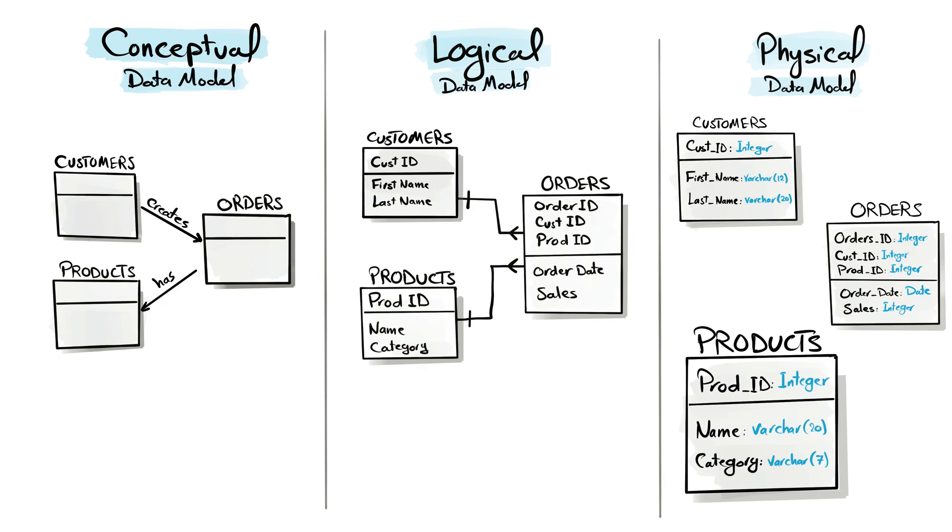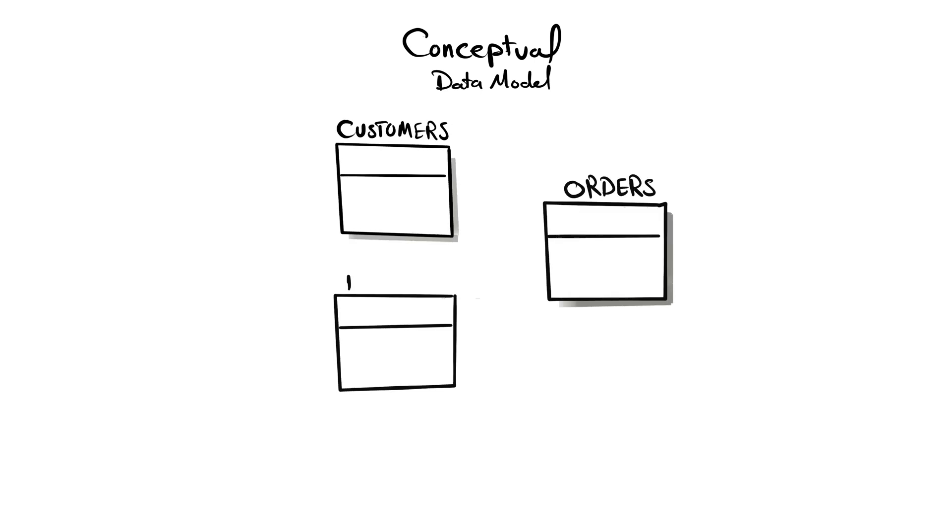We have three different types of data models at different levels of abstraction. First, we have the conceptual data model. This type is a high-level representation of the data model without going into details on how the data model is implemented. It's like a map that shows the important entities and their relationships. We usually use this type to explain the data models to business analysts and stakeholders to understand the big picture of the data.